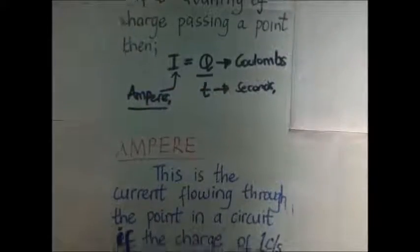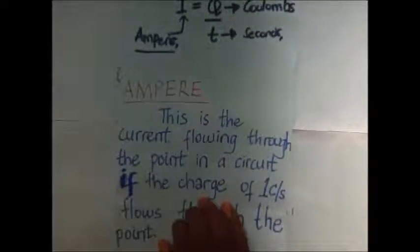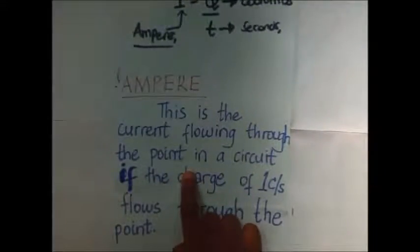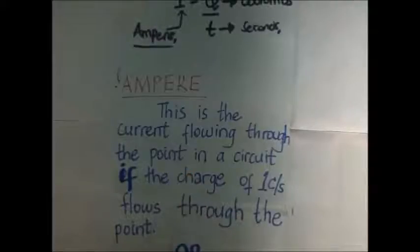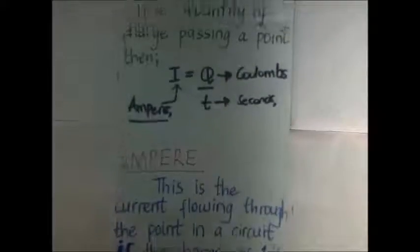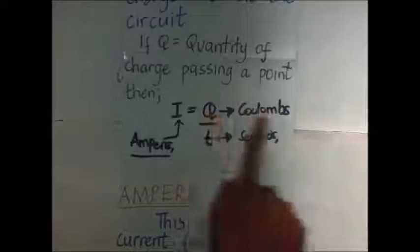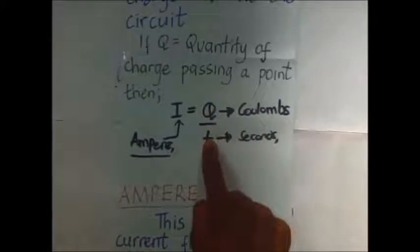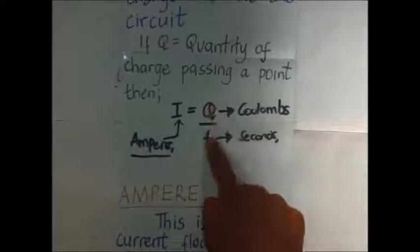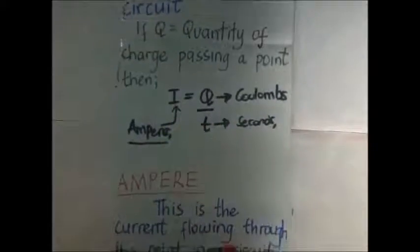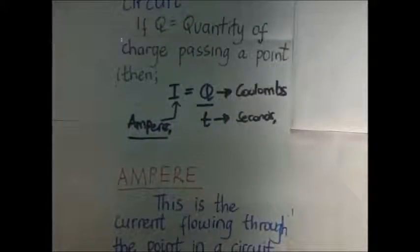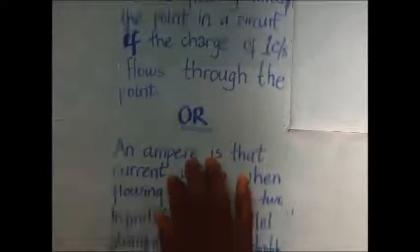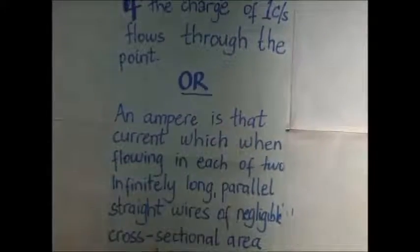That brings us to the second key definition: what exactly is an ampere? An ampere is the current flowing through a point in a circuit if a charge of one Coulomb per second flows through that point. So a charge of one Coulomb flowing in one second is what we call one ampere. That is one version of the definition.